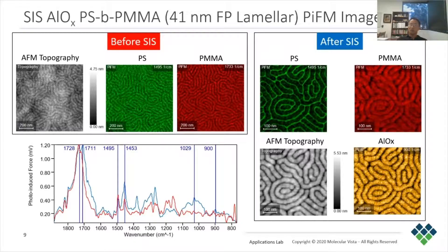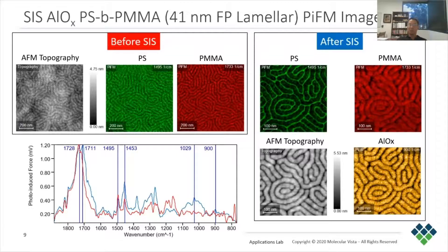This sample has undergone three cycles of TMA and water vapor exposures. On the left pane are shown the PS-PMMA block copolymer before the SIS process. As expected, the PS and PMMA blocks show similar block widths. The red and blue spectra below show PIFM spectra on the samples before and after the SIS process, respectively. The red spectrum shows the expected peaks from PS and PMMA, while the blue spectrum shows new peaks at 1029 and 900 wavenumbers, consistent with peaks associated with aluminum oxides.